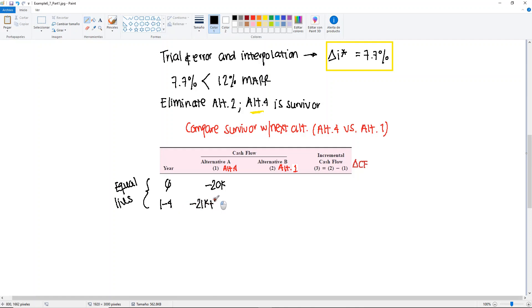I just copy the cash flows. Alternative 4 is minus $20,000, and then the two A's are minus $21,000 plus $29,000, giving us a total of $8,000. Alternative 1 is minus $80,000, and the A's are minus $28,000 plus $61,000, giving us a result of $33,000. Then we get the difference between the two: minus $80,000 minus minus $20,000 which is minus $60,000, and then here would be $33,000 minus $8,000, giving us a total of $25,000.